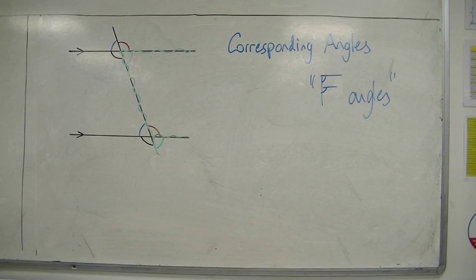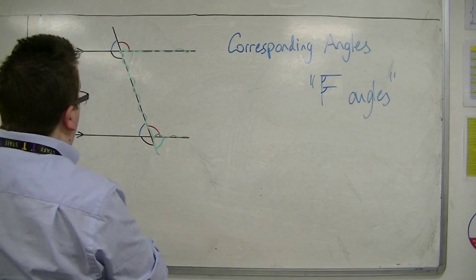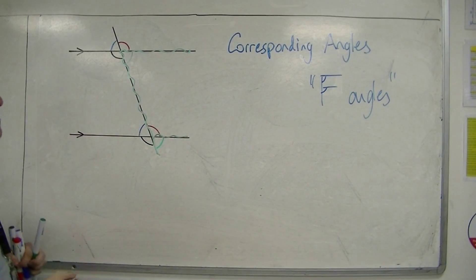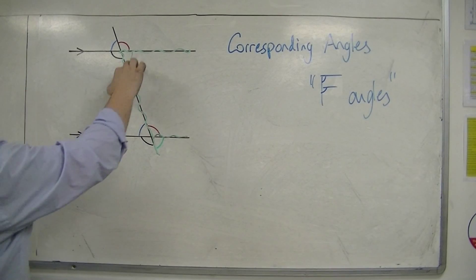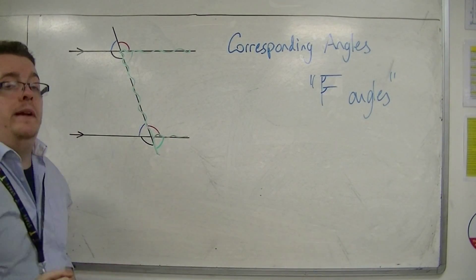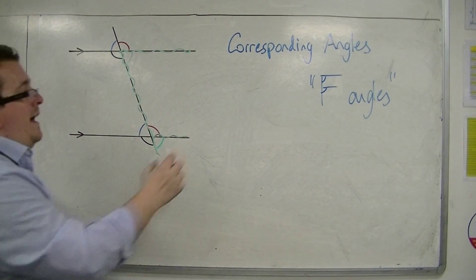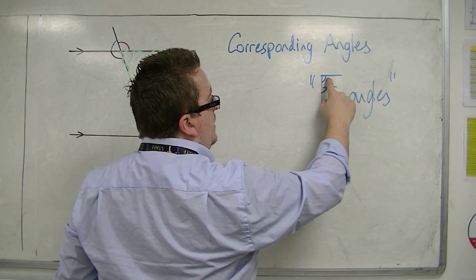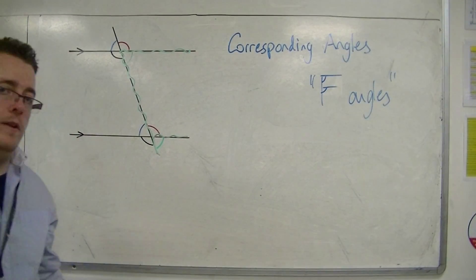it is effectively an F that creates those two angles. You may be looking for other Fs that you can find. The F might be upside down or back to front, but it's always got those two angles between. So one angle between the parallel sides and one angle outside.